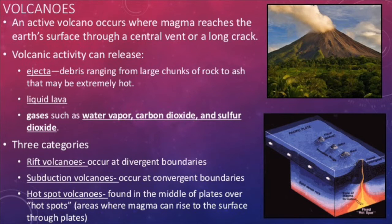Next, we have volcanoes. These are literally just defined as areas where magma reaches the surface — here it becomes lava. When a volcano erupts, it obviously releases lava, but it can also release ejecta, or solid debris, and gases. These gases include water vapor, carbon dioxide, and sulfur dioxide. Notice that all of these are either greenhouse gases or are considered pollutants. Volcanoes are natural sources of air pollution as a result.